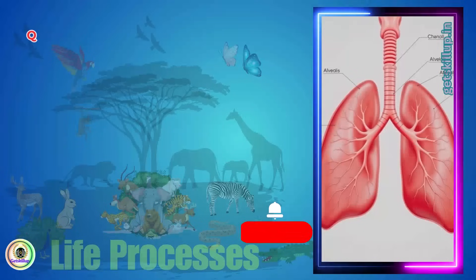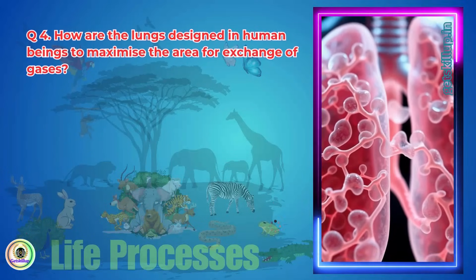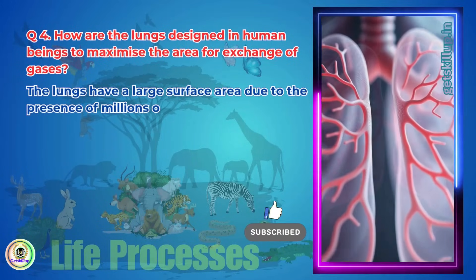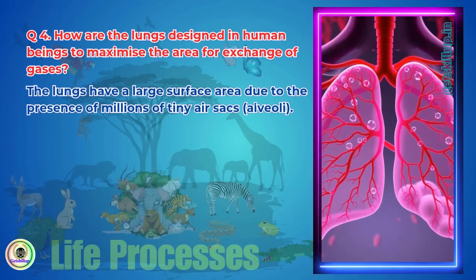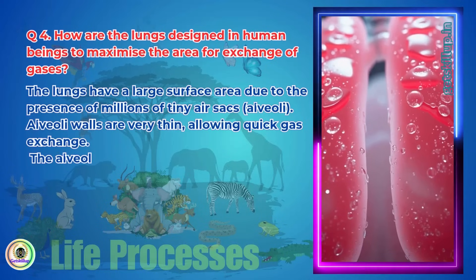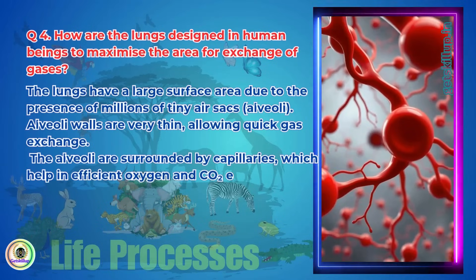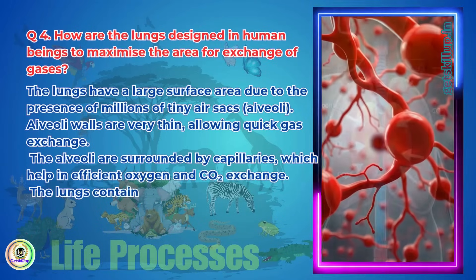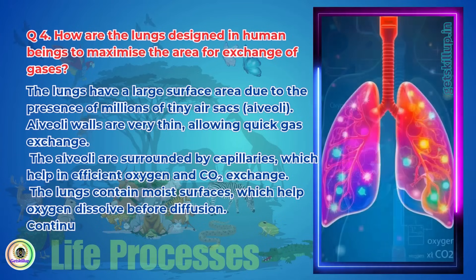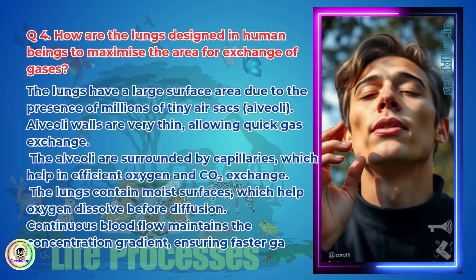Question 4: How are the lungs designed in human beings to maximize the area for exchange of gases? The lungs have a large surface area due to the presence of millions of tiny air sacs called alveoli. The alveoli walls are very thin, allowing quick gas exchange, and are surrounded by capillaries for efficient oxygen and CO2 exchange. The lungs contain moist surfaces which help oxygen dissolve before diffusion, and continuous blood flow maintains the concentration gradient, ensuring faster gas exchange.